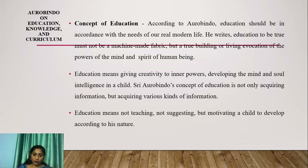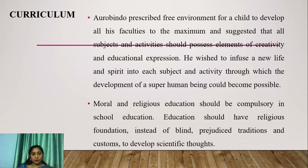Aurobindo's concept of education is not only acquiring information but acquiring various kinds of understanding. Education means not teaching, not suggesting, but motivating a child to develop according to his nature. He prescribed a free environment for a child to develop all his faculties to the maximum, and suggested that all subjects and activities should possess elements of creativity and educational expression. He wished to infuse new life and spirit into each subject and activity through which the development of a superhuman being could become possible.